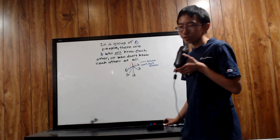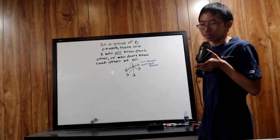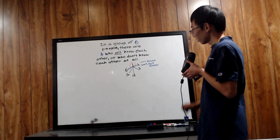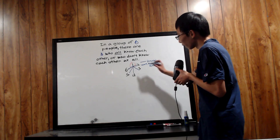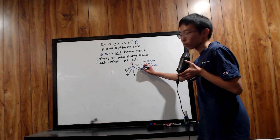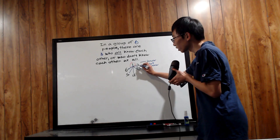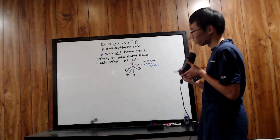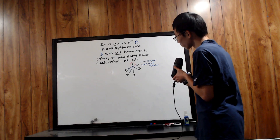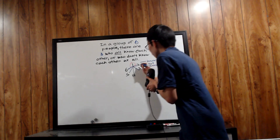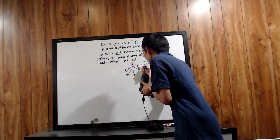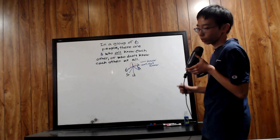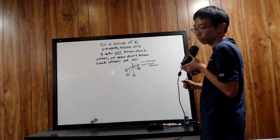First off, let's assume the worst case scenario — that's how we often get to our proof. Notice that if two and three know each other, that instantly completes a solid-line triangle with one, two, and three. So to assume the worst case, let's assume that two and three do not know each other. We're trying to come up with the worst case scenario, so let's keep going.